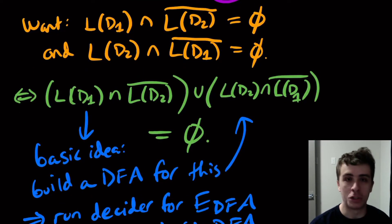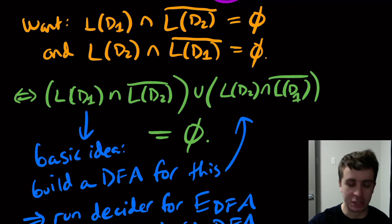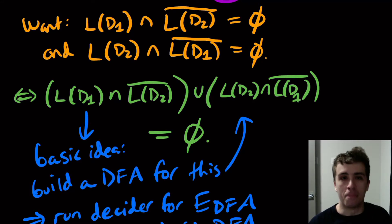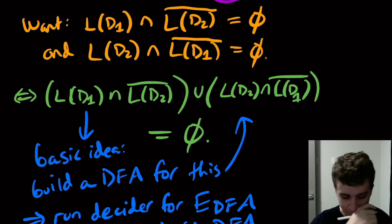This doesn't work for CFGs, or at least this method doesn't work, because CFLs are not closed under intersection or complement. There might possibly be a different way, although you could show that it's undecidable. But this particular method won't work directly for CFGs for that reason.